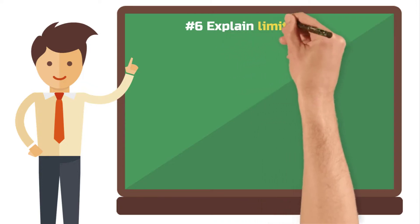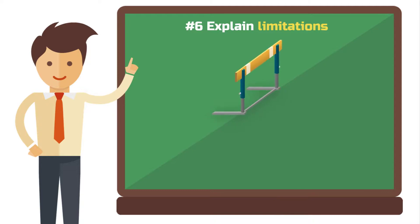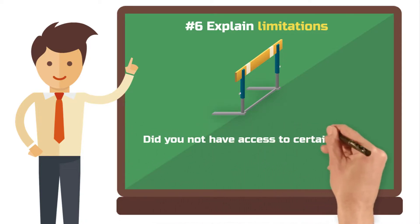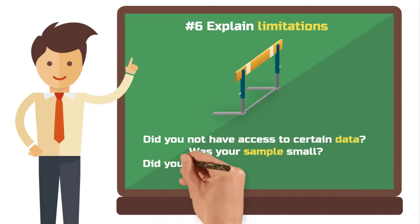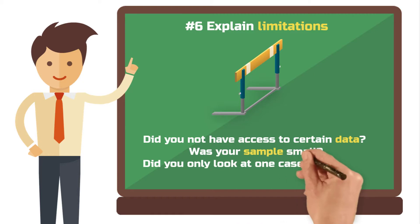Again, we are at the meta-level, reflecting on our own work. When writing your conclusion, point out any hurdles that stood in the way of your work. For example, did you not have access to certain data? Was your sample small but justifiable for the scope of this work? Did you only look at one set of facts, for example a case study and lack a means of comparison?